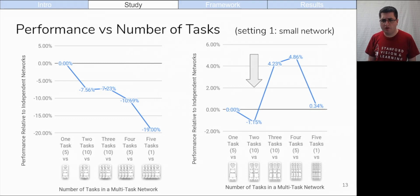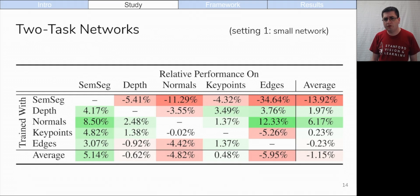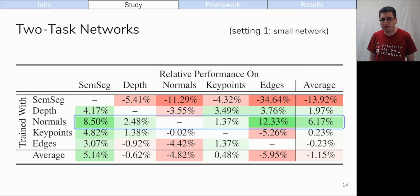This presents an opportunity for multi-task networks to outperform one large multi-task network. On average, however, two task networks still experience negative transfer. Here are those two task networks and their performances compared to two half-size independent networks. For example, this is the performance of semantic segmentation when it's trained with normals compared to when it's trained by itself. Most two task networks perform badly, and on average, single task networks perform more than one percent better. However, we can see that adding surface normal prediction helps the performance of every task it is trained with, and semantic segmentation sees a benefit when it is trained with anything else.